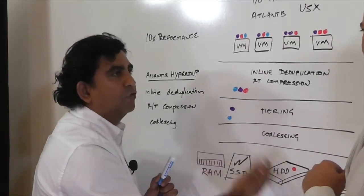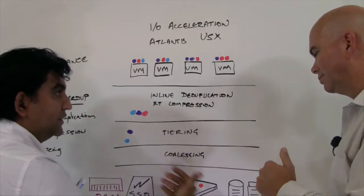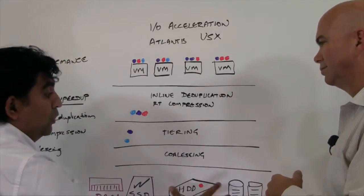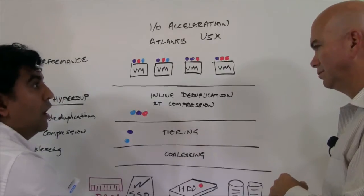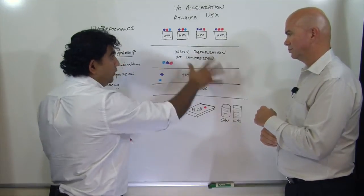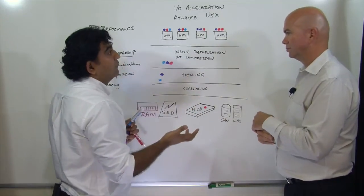As a result, you take advantage of throughput, you take advantage of spindle physics, all of that to allow a tier 2 storage system or even cheap local hard drives to perform along with the stack in a way that's better than an all-flash array.